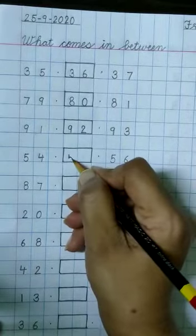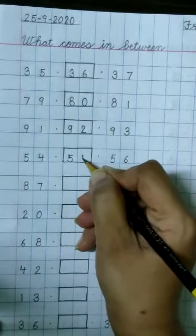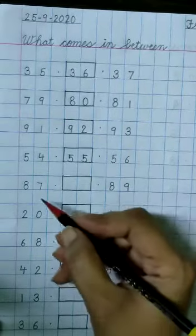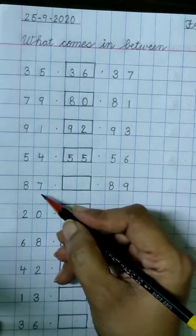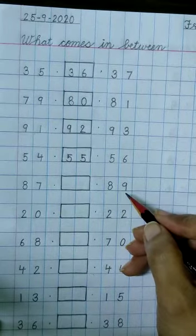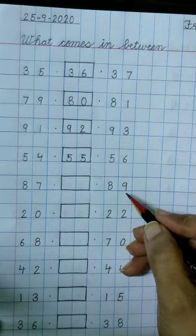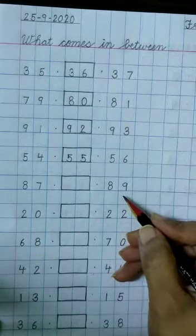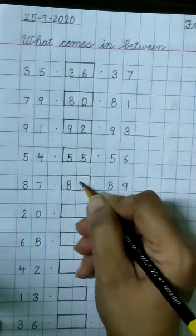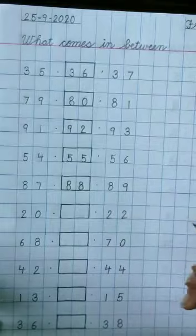So write 5, 5, 55 in this box. 88 comes in between 87 and 89. So write 8, 8, 88 in this box.